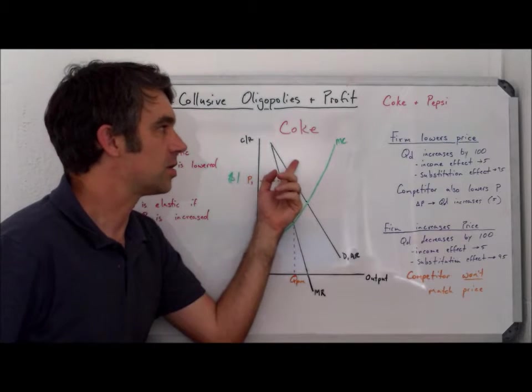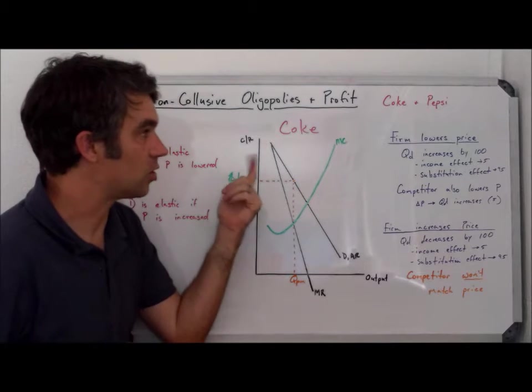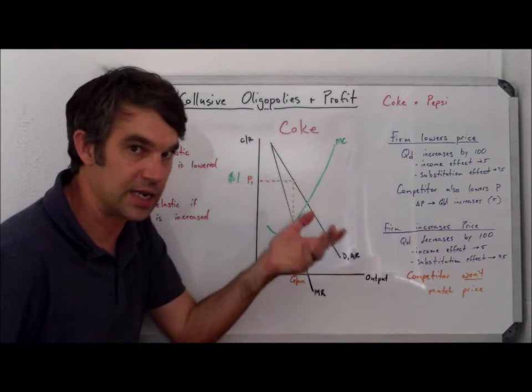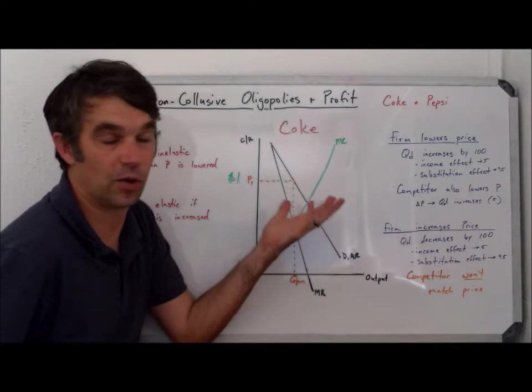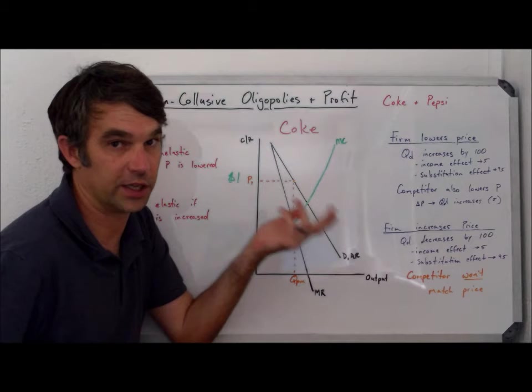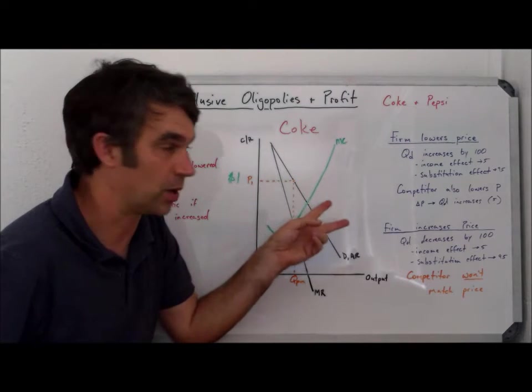So let's take Coke as our example. Let's say that the price of a Coke is $1 and Coke is going to lower their price by 10% down to $0.90. Well, the law of demand states that if they lower their price, quantity demanded will increase. Let's look at two reasons why quantity demanded will increase.